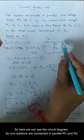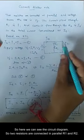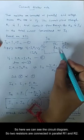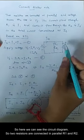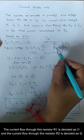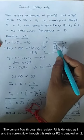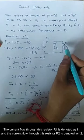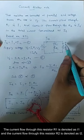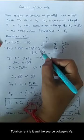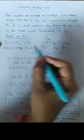Here we can see the circuit diagram. Two resistors R1 and R2 are connected in parallel. The current flow through resistor R1 is denoted as I1 and the current flow through resistor R2 is denoted as I2. The total current is I and the source voltage is Vs.